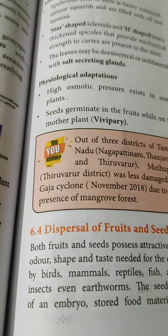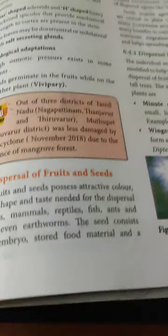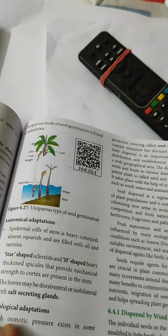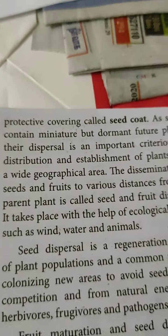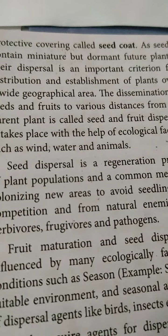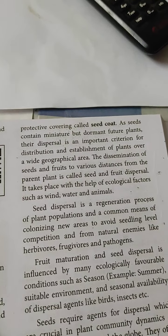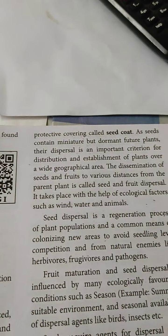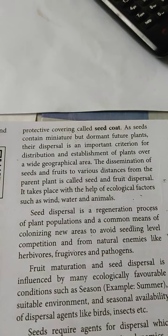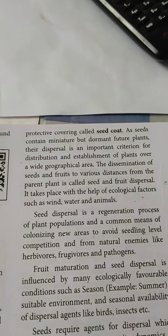We know the seed contains the embryo. The three parts of a seed are: the embryo, the reserved food material (stored food), and the protective layer called the seed coat. As seeds contain miniature but dormant future plants, dispersal is essential. The dispersal is an important criterion for distribution and establishment of plants over a wide geographical area.